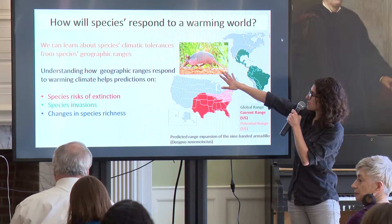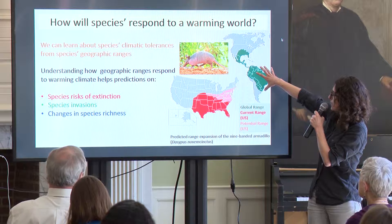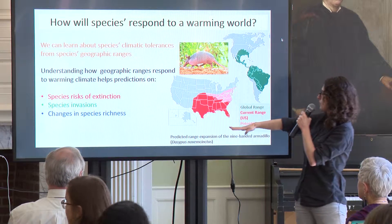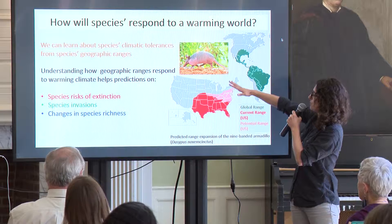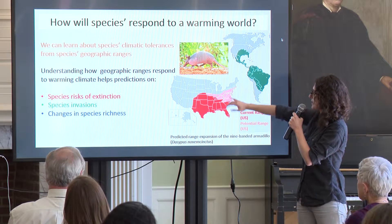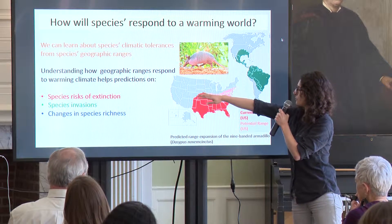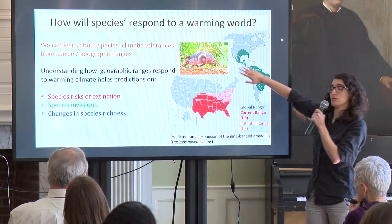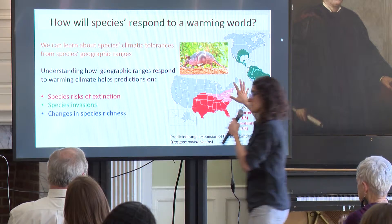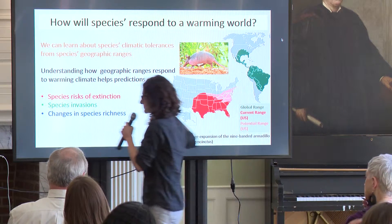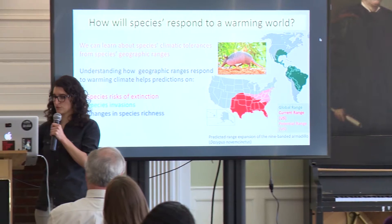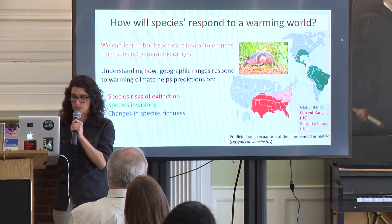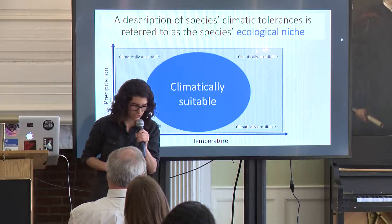If you take this armadillo, we know its global range, we know it likes warm conditions, and if you want to predict where else it's going to go in the US, we can know that it will likely not go past Rhode Island because then it'll be too cold for that species to survive. These kinds of methods are useful to determine species' risks of extinction, invasions, and changes in richness and composition.